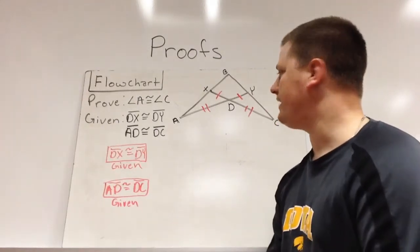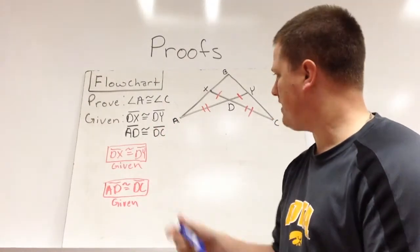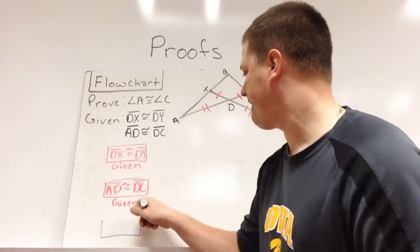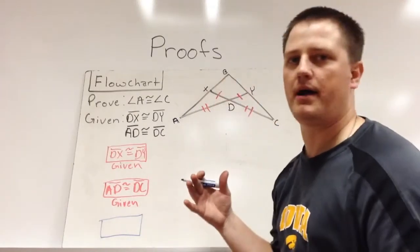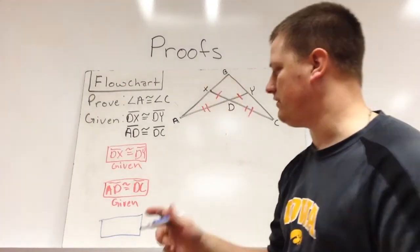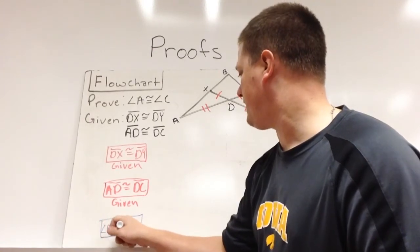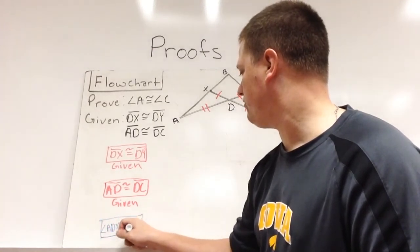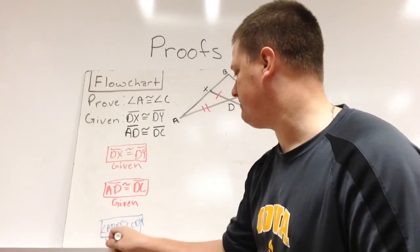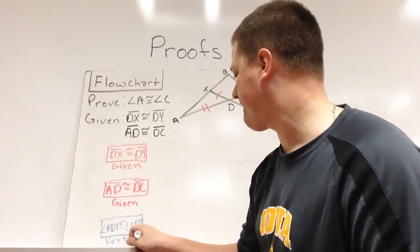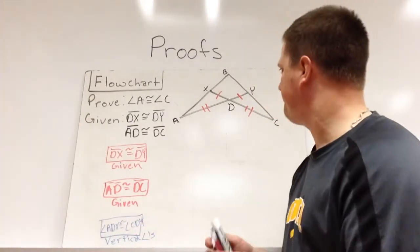We can't really tell much about the triangles at this point. So because we need a congruence, we usually need three things. Here we have a side, a side. So the next one we're going to go with is we probably need another side, which we can't really say much about those because we don't know where X and Y are, or we need an angle, as in these. Well, these are vertical angles, so we're going to go angle ADX is congruent to angle CDY. And that's because they're vertical. So we have vertical angles. So we'll mark those.